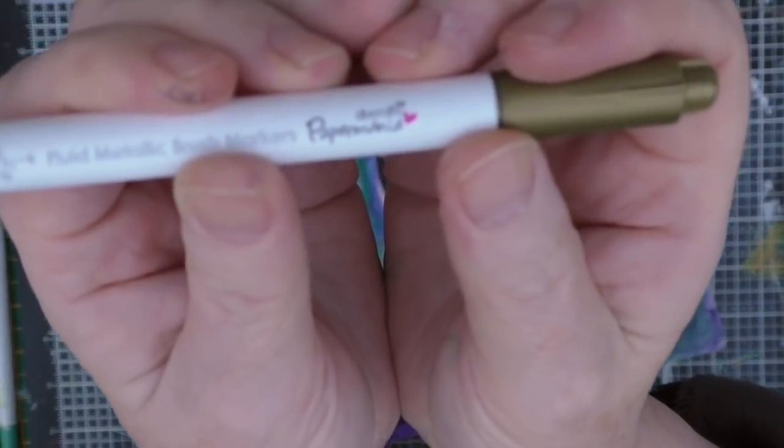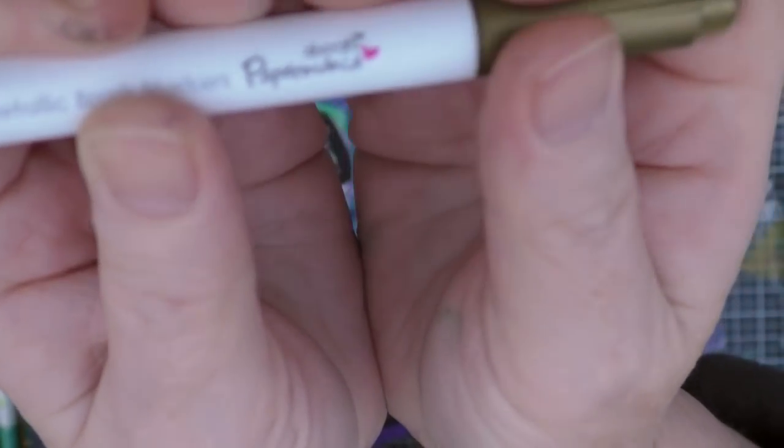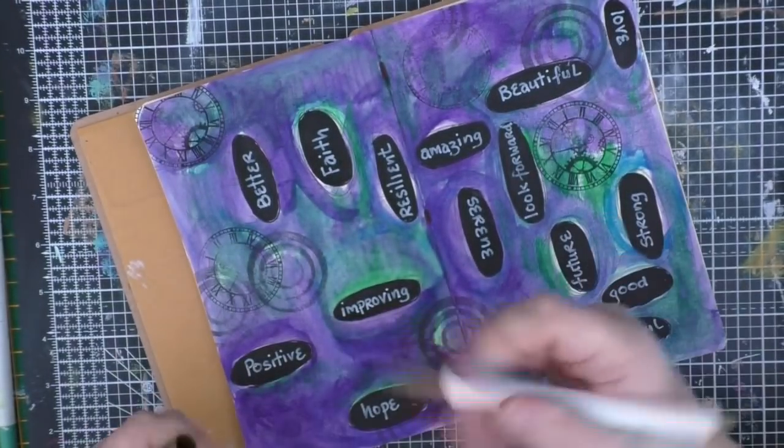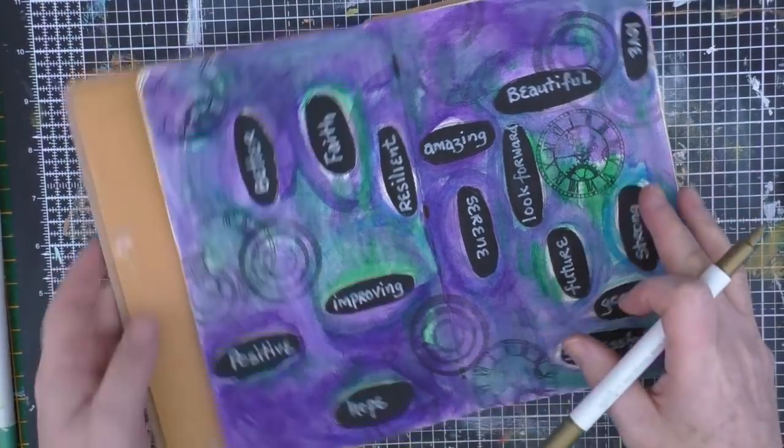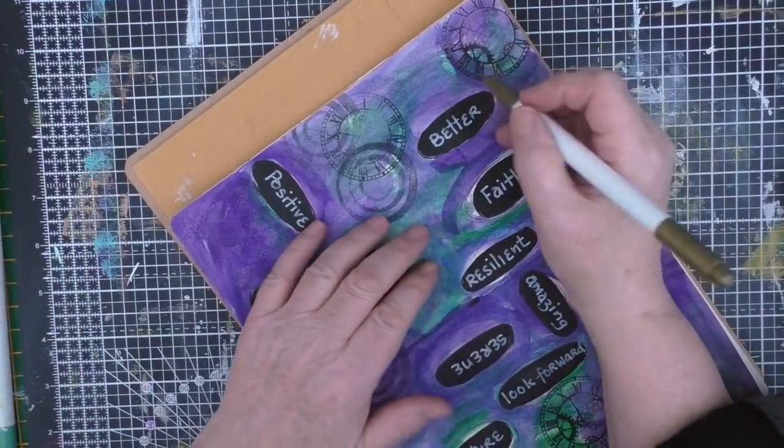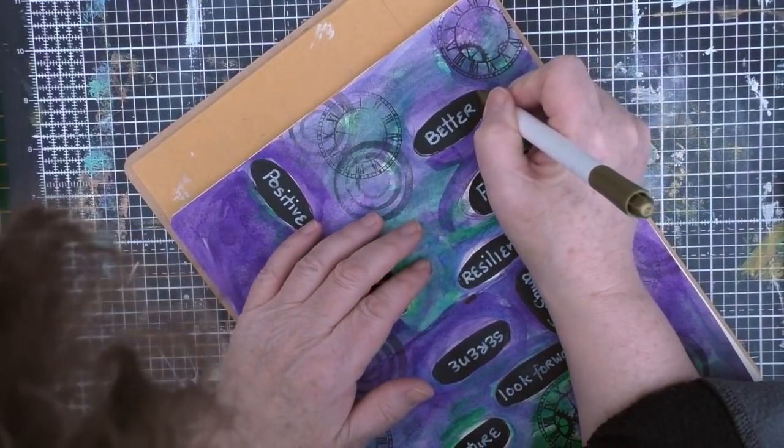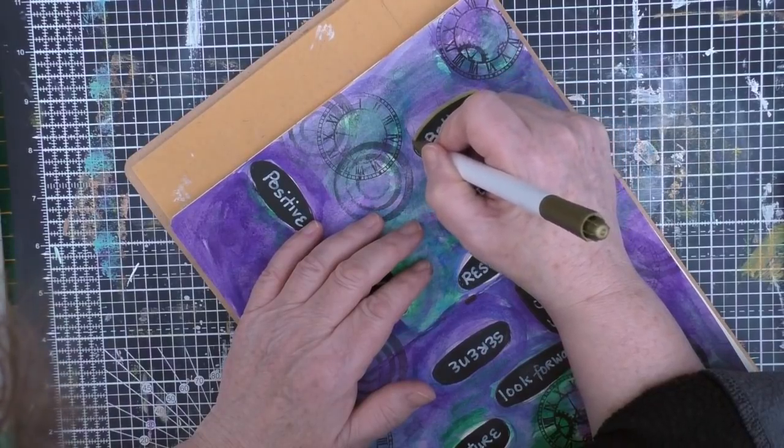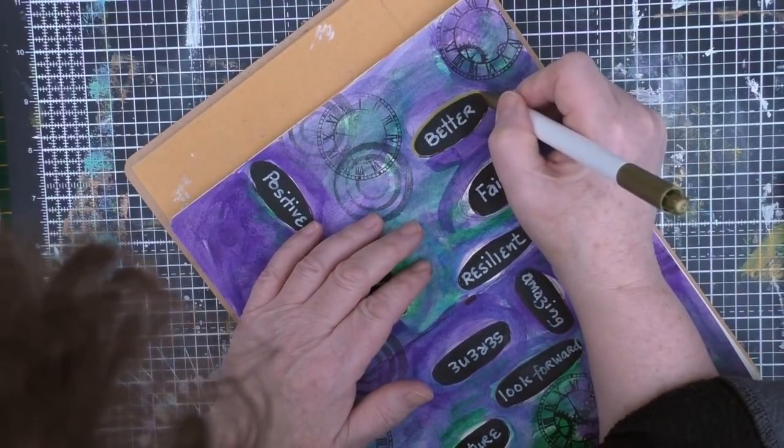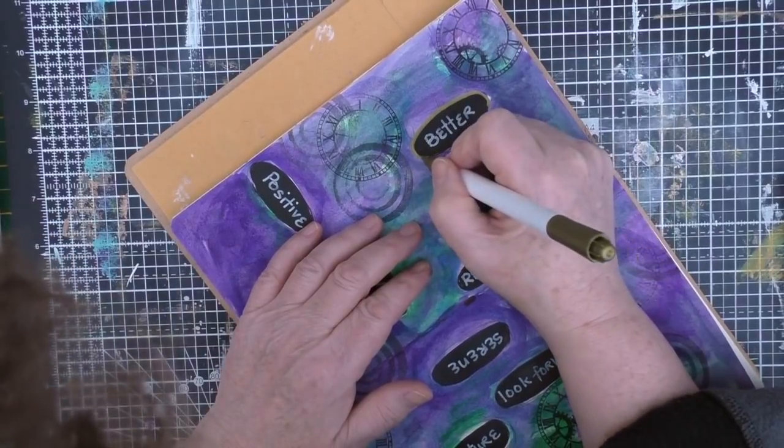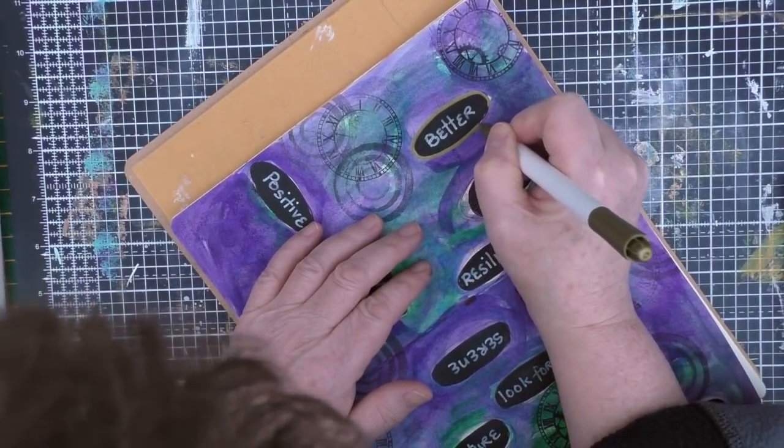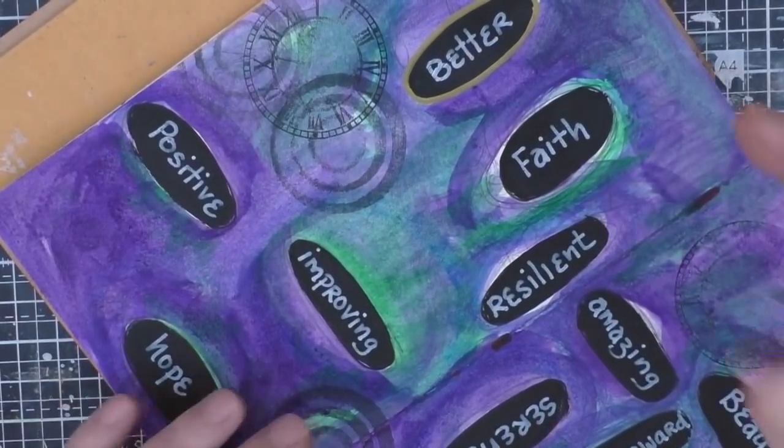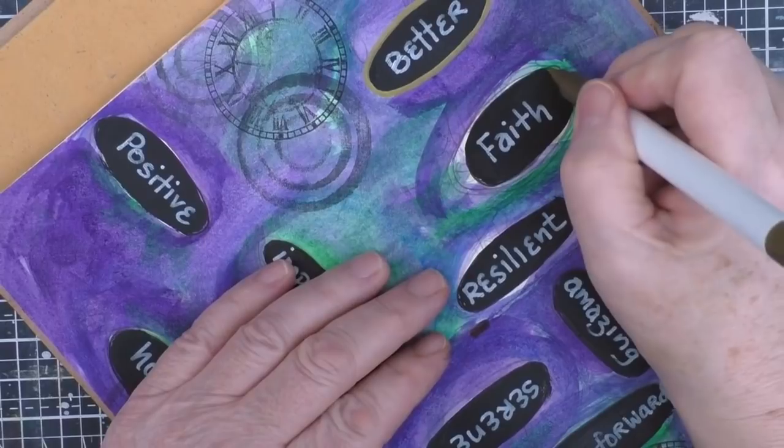Once that was done, I felt that I actually wanted to highlight the words even more. So I took this gold metallic marker and all I do here is frame them. I was having to go close just to see where I was marking. And again, I go around all the words in the same way.